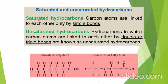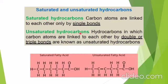Now, what are saturated and unsaturated hydrocarbons? Saturated hydrocarbons are those in which carbon atoms are linked to each other by single bonds only. When carbon atoms are linked by single bonds they are known as saturated hydrocarbons. Unsaturated hydrocarbons are those in which carbon atoms are linked to each other by double or triple bonds, and they are known as unsaturated hydrocarbons.